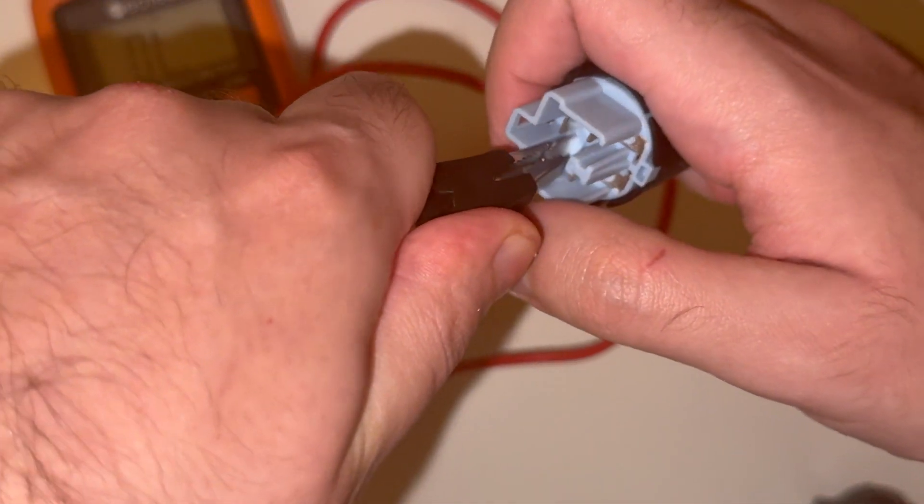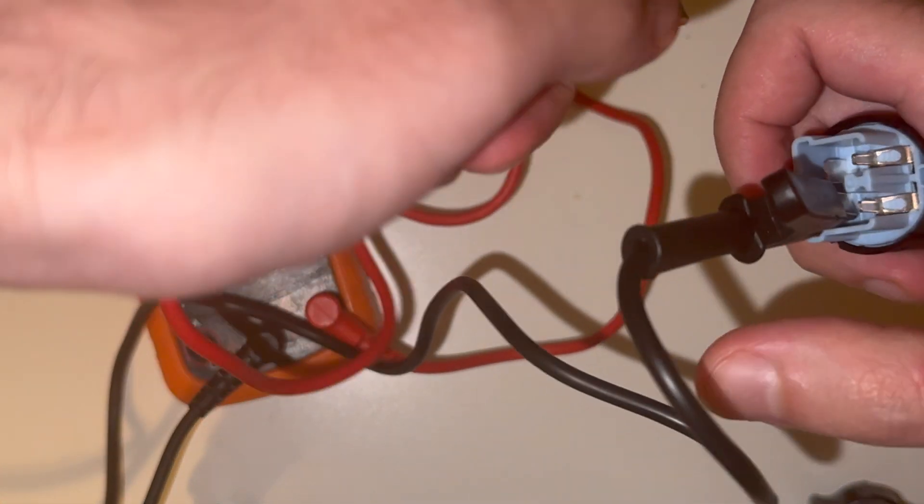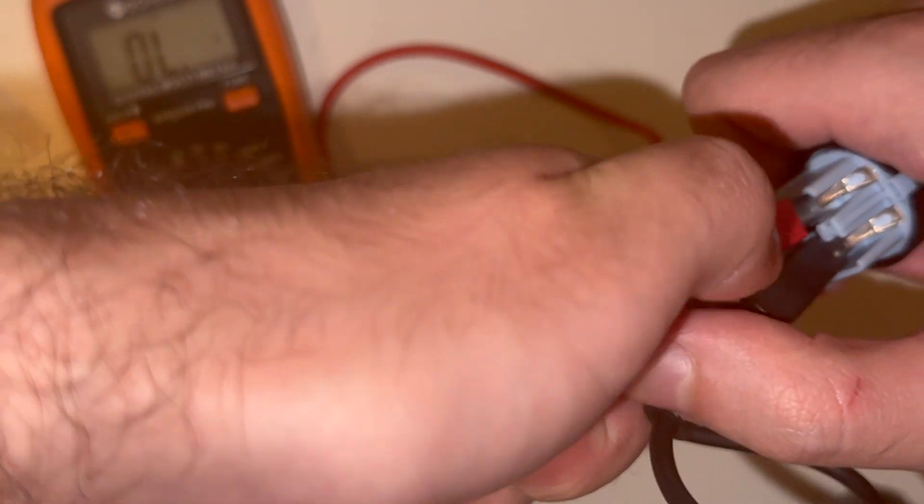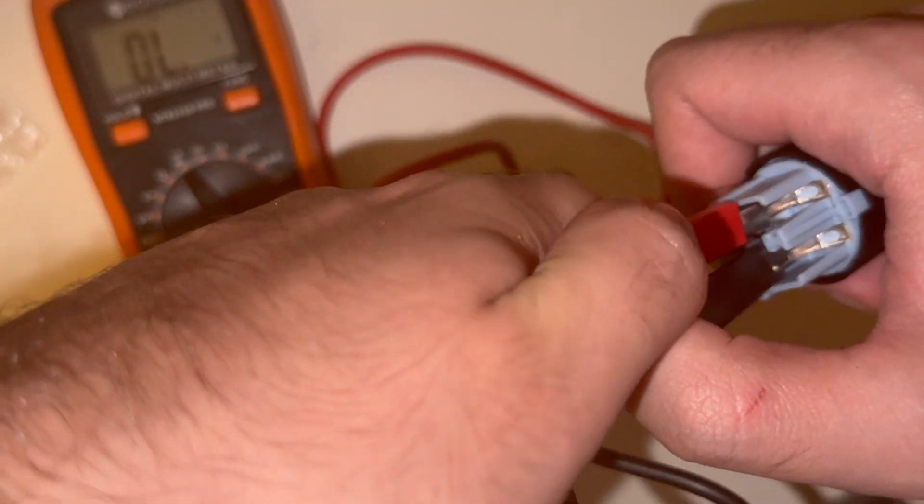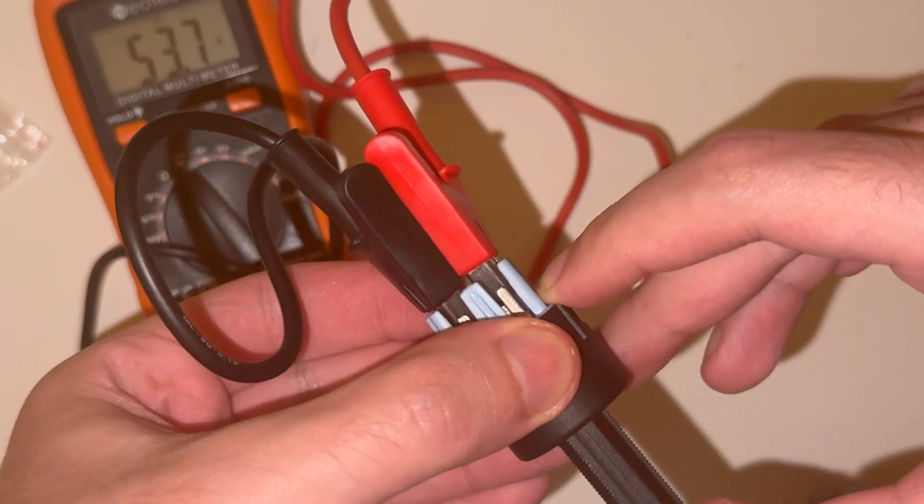Now we're going to test pins 1 and 2, which make up the normal stoplight switch. So as you can see, there's this constant noise because the switch is released when the brakes are pressed. And when I push in, it's like the brake pedal has been released and the noise goes away.